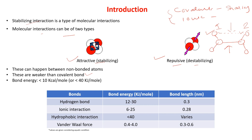These bonds are weaker than covalent bonds. There are four types of non-covalent or stabilizing interactions: hydrogen bond, ionic interaction, hydrophobic interaction, and Van der Waal forces. The bond energy of hydrogen bond is 20 to 30 kilojoule per mole; ionic interaction is 6 to 25 kilojoule per mole; hydrophobic interaction is less than 40 kilojoule per mole; and Van der Waal forces are 0.4 to 4 kilojoule per mole. These stabilizing interactions help to stabilize macromolecules or biomolecules, and are formed between two non-bonded atoms.